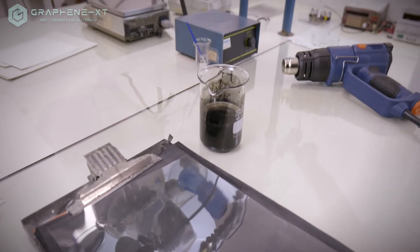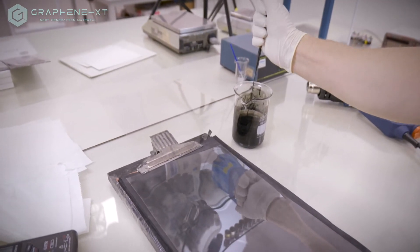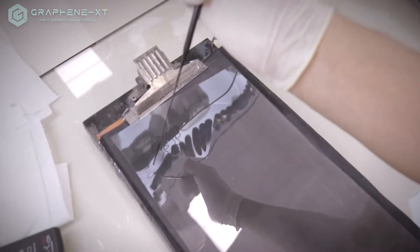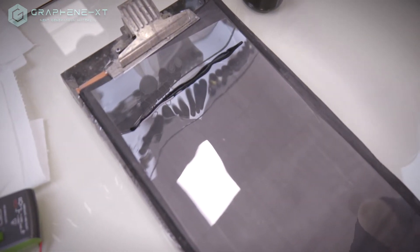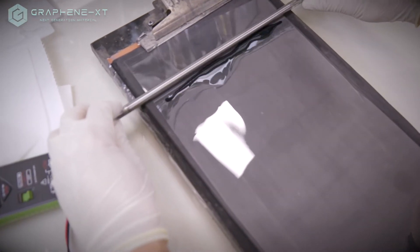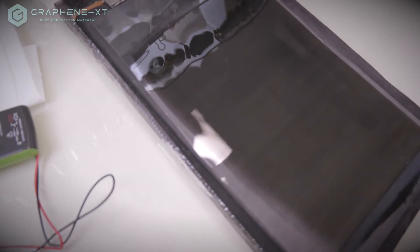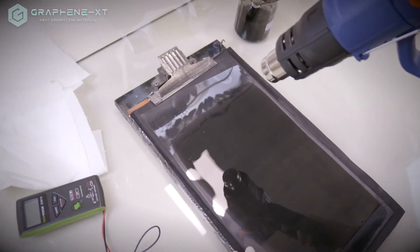Deposit a small amount of graphene solution on top of the polymer film. Then spread it with a Meyer rod and then dry it with hot air.